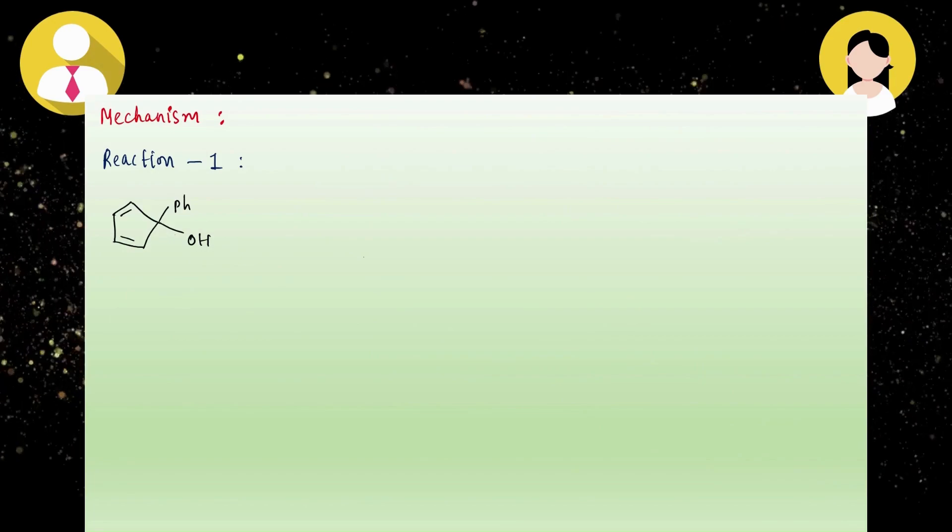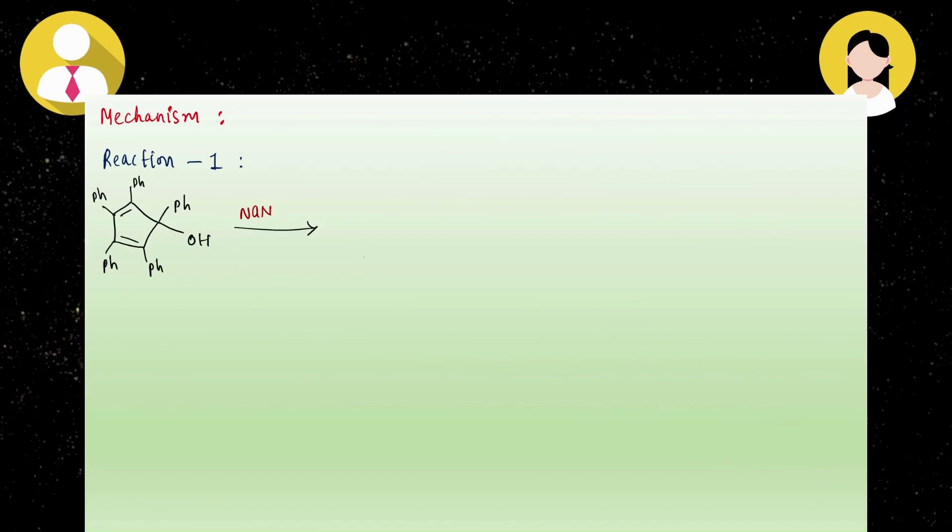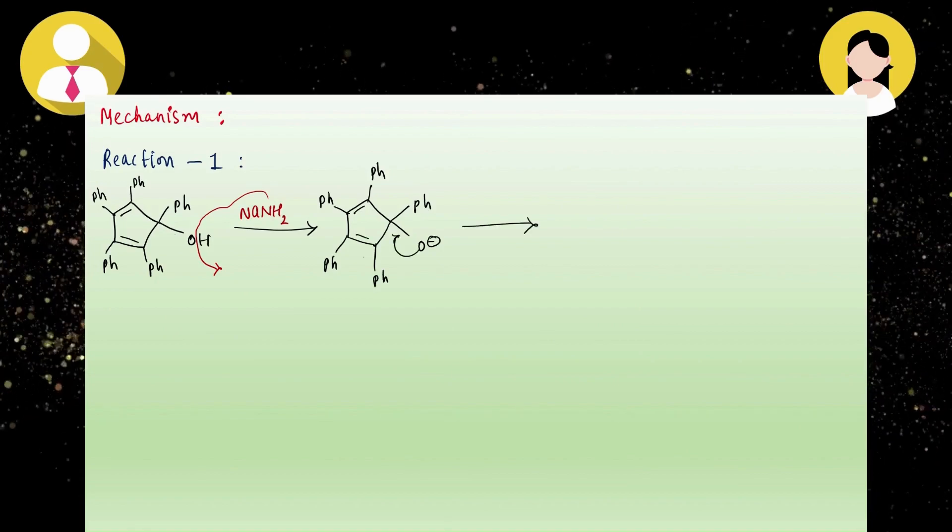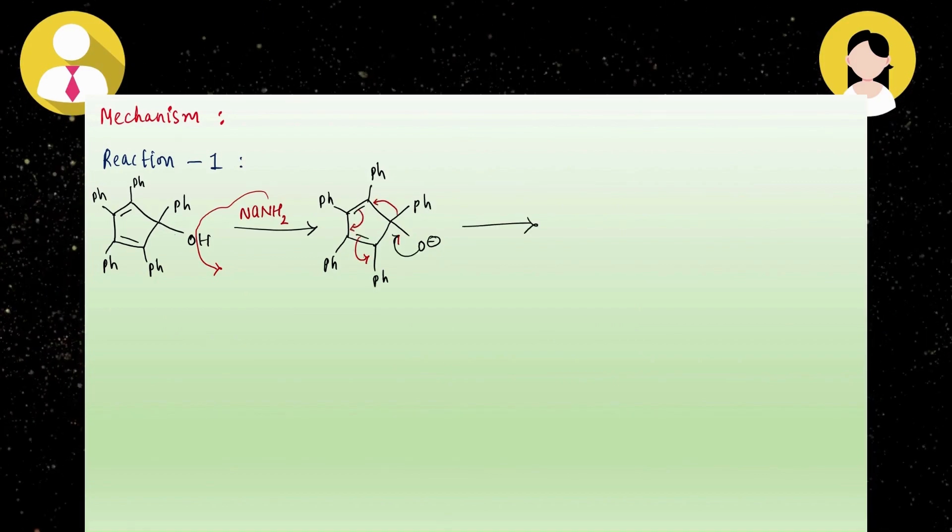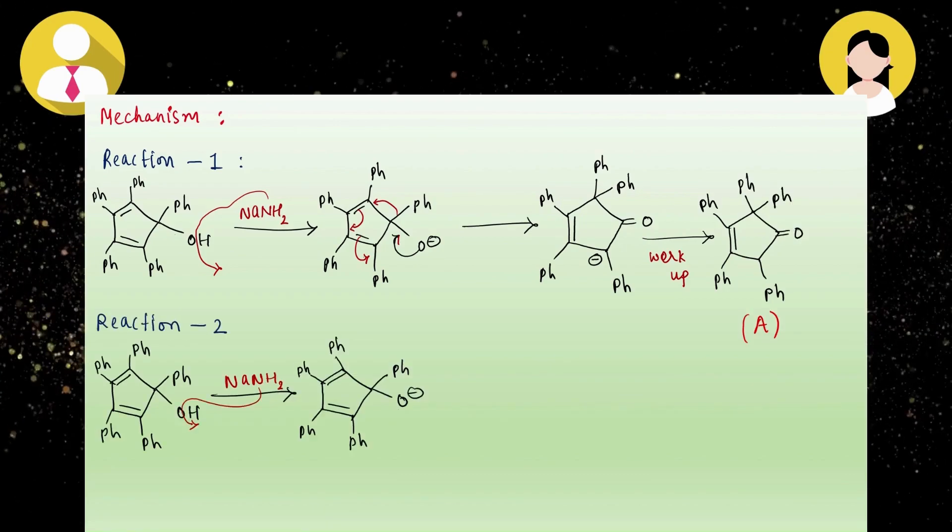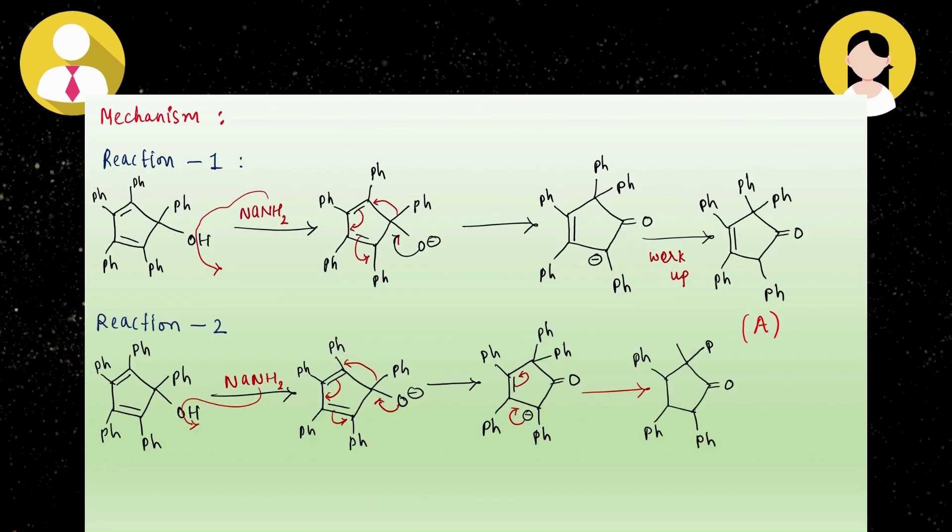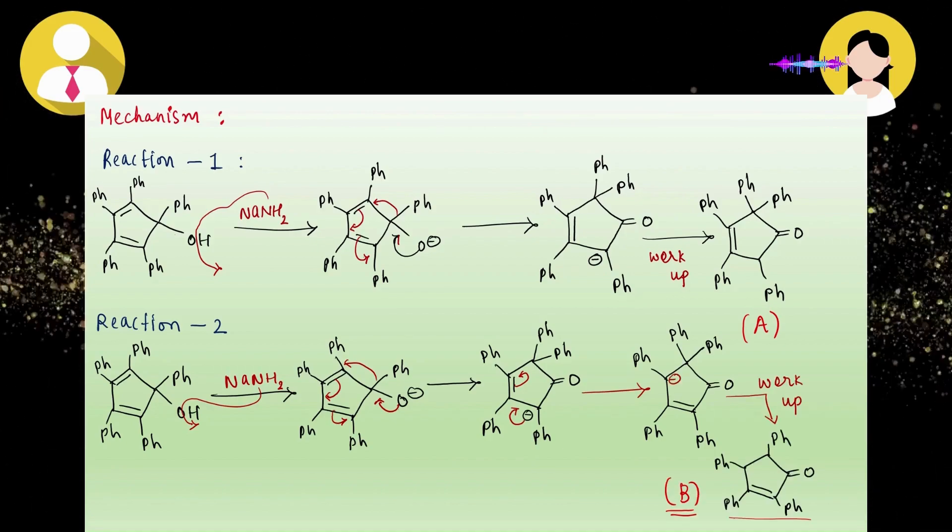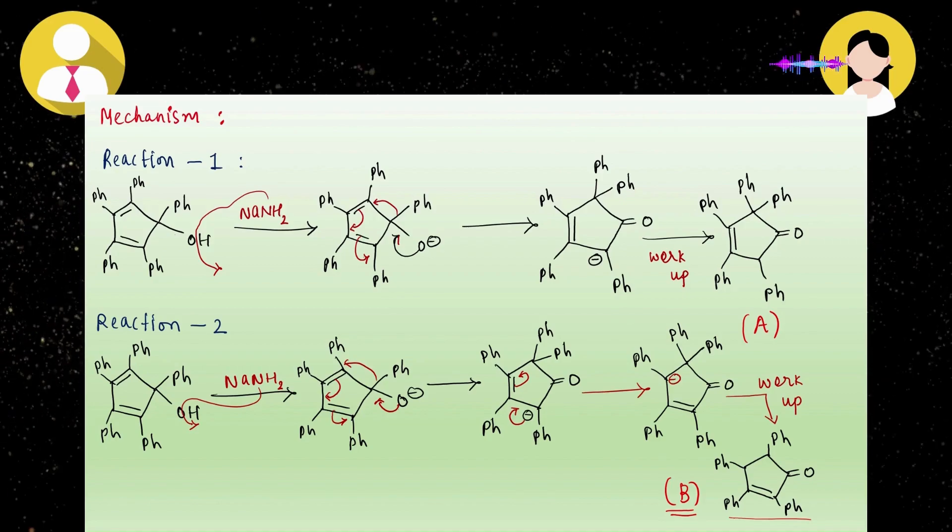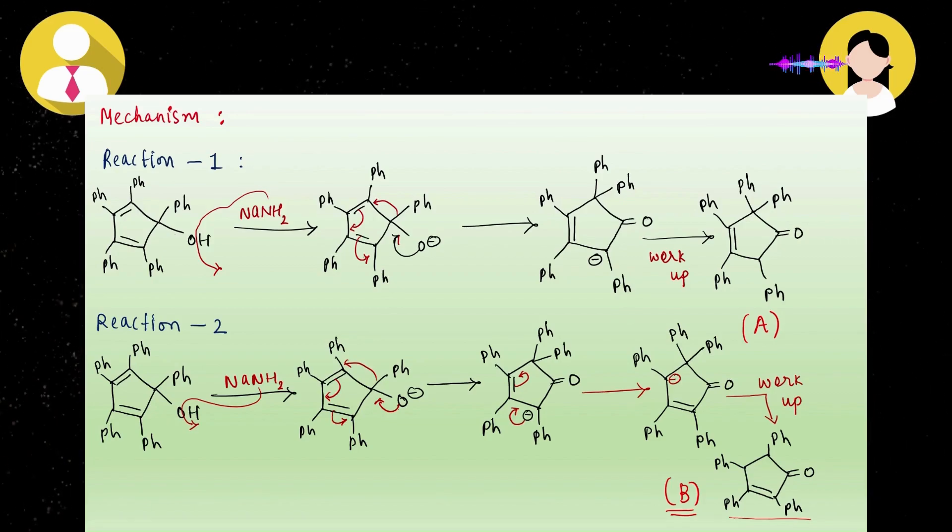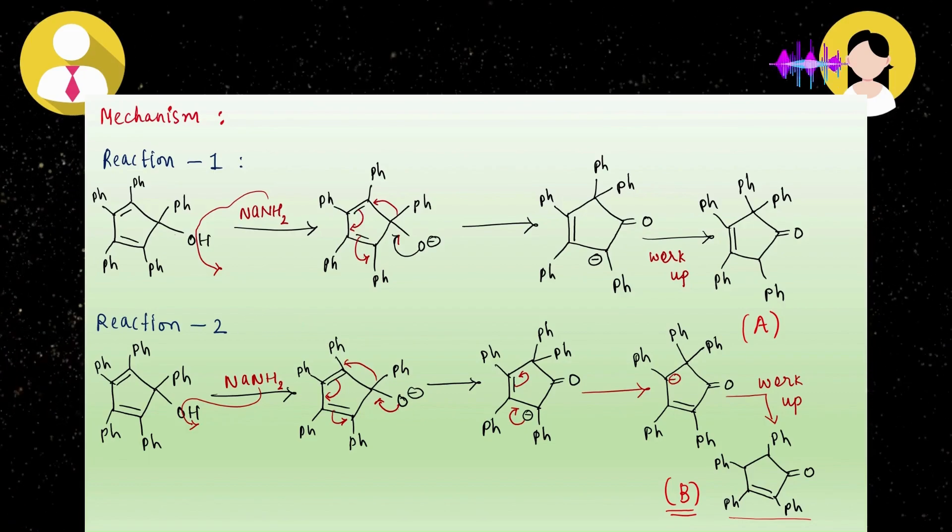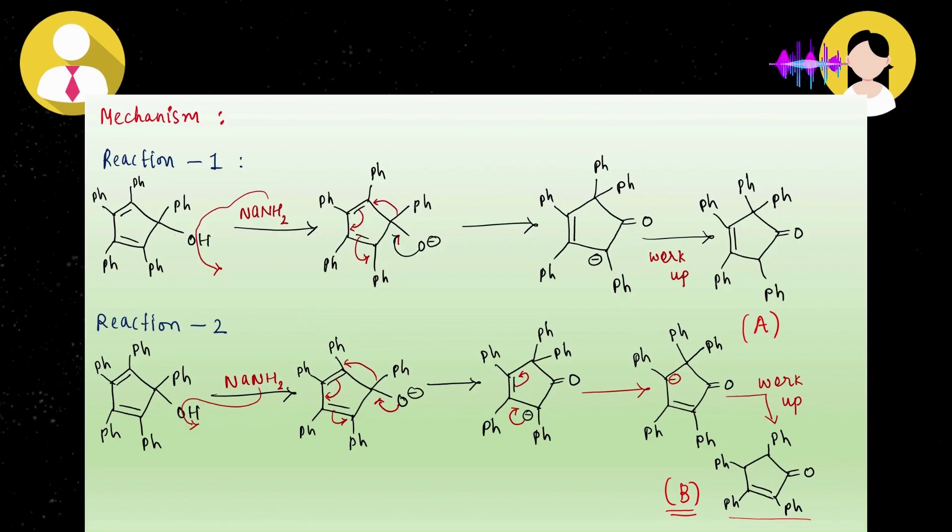He said okay and asked can you show the mechanism of these two reactions. I started writing the mechanism. First step is abstraction of this acidic proton through NH2, then formation of negative charge on the oxygen, then delocalization of this negative charge, followed by workup and formation of product A. In the second reaction, one step is additional—the rearrangement of this negative charge, then workup and formation of product B. I said on the basis of its mechanism we can also differentiate these two products. In mechanism one, reaction steps are less, so it will form faster compared to reaction two. The rate of kinetic product formation is faster compared to thermodynamic product.